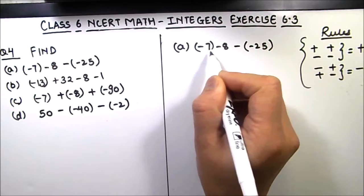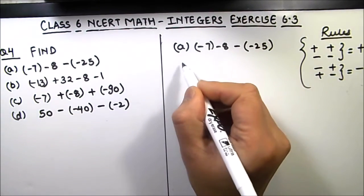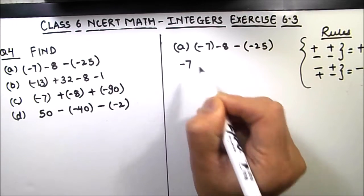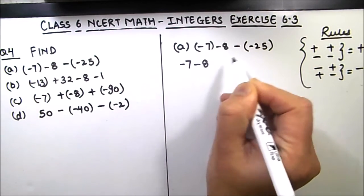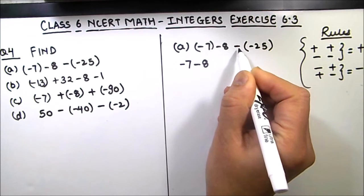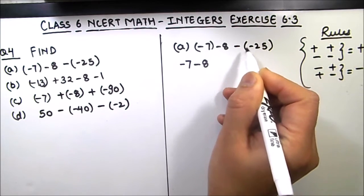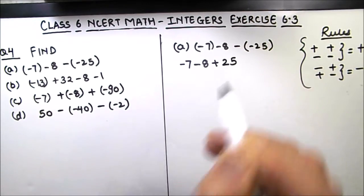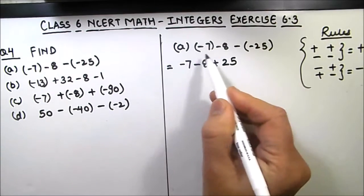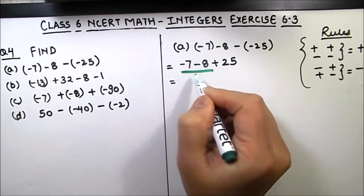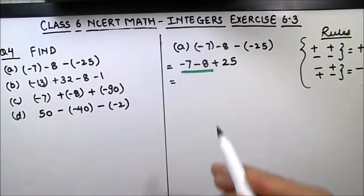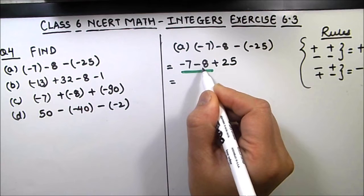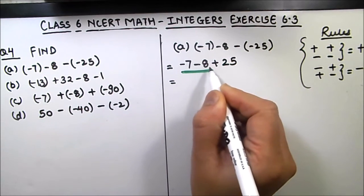Let's start with part A. We have minus 7 minus 8 and then minus and minus 25. Opening the brackets: minus and minus gives a positive sign, so this becomes plus 25. In the first step we remove all brackets. Now we move from left to right.